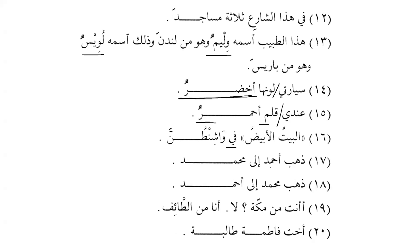Al-Baytu al-Abyadu fi Washingtona - the White House is in Washington. After Harfi Jar, if the noun is Mamnoo min as-Sarf, it will take Fatha. So it will be Washingtona. Dhahaba Ahmadu ila Muhammadin - Ahmed went to Mohamed. Now if we want to say Mohamed went to Ahmed: Dhahaba Muhammadun ila Ahmada - excellent.